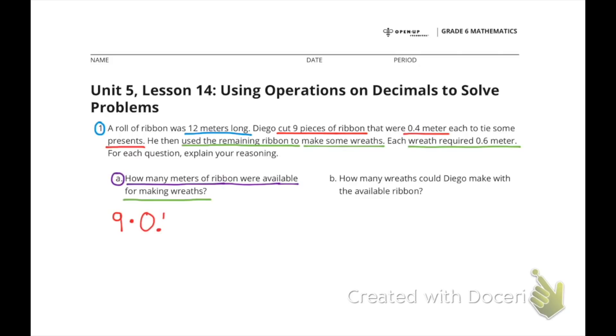9 times 0.4 is 3.6. And 12 meters minus 3.6 meters equals 8.4 meters. There were 8.4 meters of ribbon left to make wreaths.